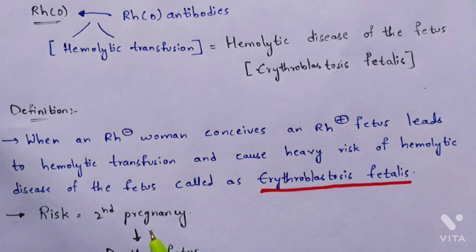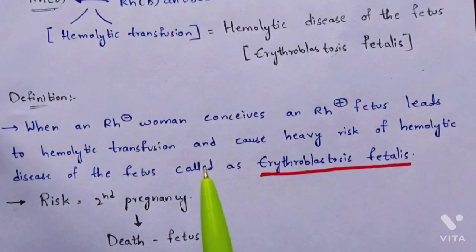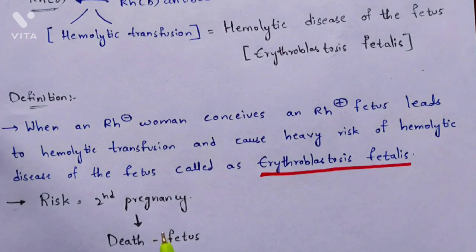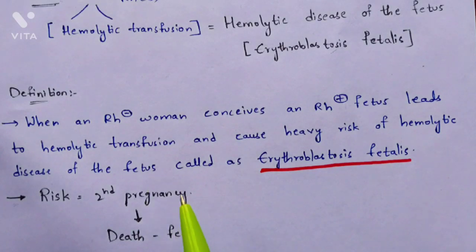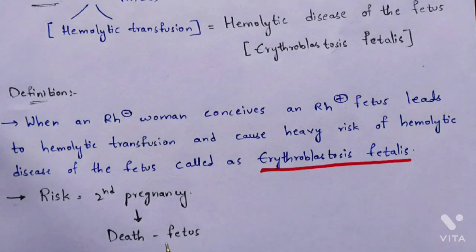An important point is that there are two kinds of pregnancies to consider. In the first pregnancy, even though Rh-positive antigens are present in the fetus, they do not cause harm — the delivery is very safe. However, in a second pregnancy, there is severe risk to the fetus. Even if delivery is successful in the second pregnancy, the baby will be infected with erythroblastosis fetalis, and sometimes the fetus may even die.